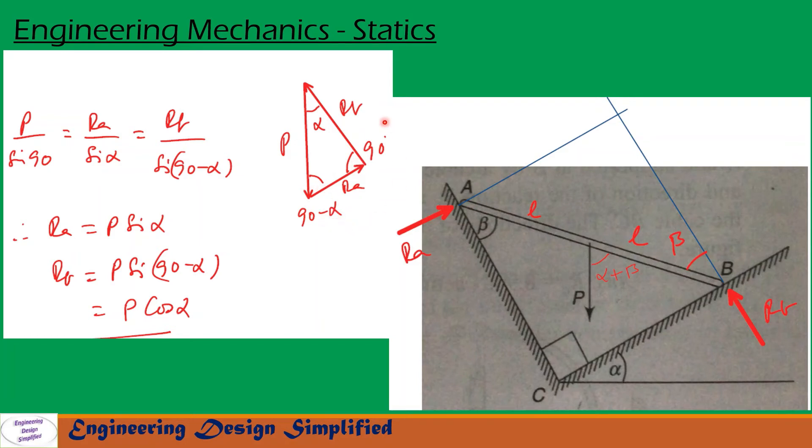Now let us apply sine rule for this right angle triangle. Sine rule is P by sine 90 equal to RA by sine alpha equal to RB by sine 90 minus alpha. So from this sine rule, we can find RA equal to P sine alpha.